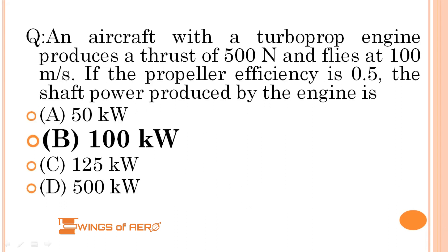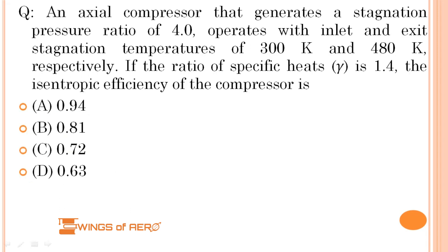So the correct answer is option B, that is 100 kW. Next question: an axial compressor generates a stagnation pressure ratio of 4, and operates with inlet and exit stagnation temperatures of 300 K and 480 K respectively. If the ratio of specific heats γ is 1.4, the isentropic efficiency of the compressor is: (A) 0.94, (B) 0.81, (C) 0.72, or (D) 0.63.